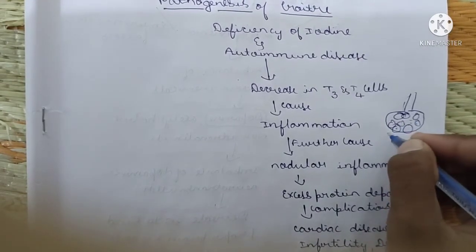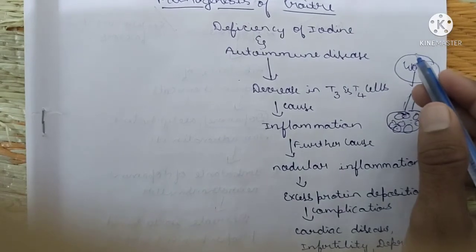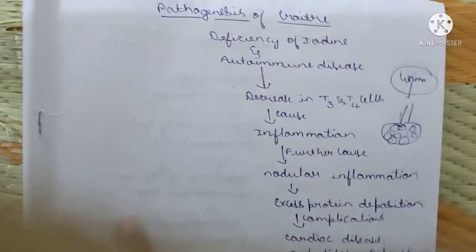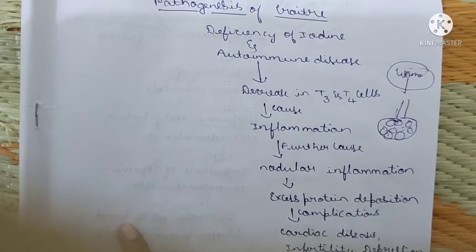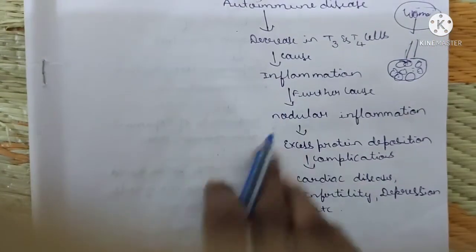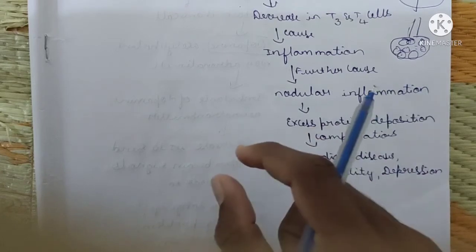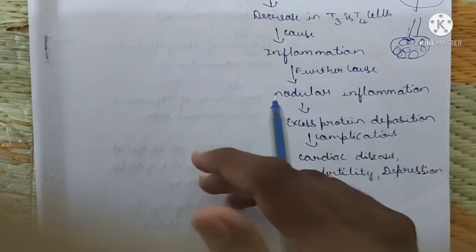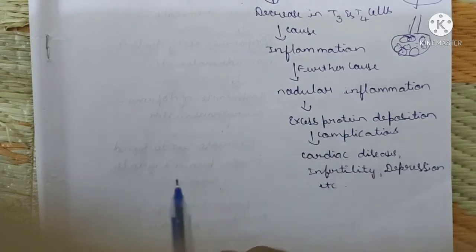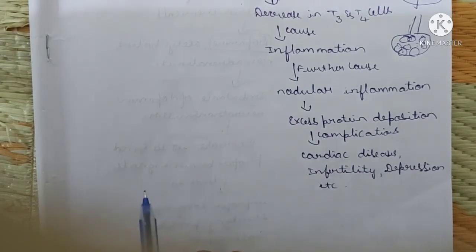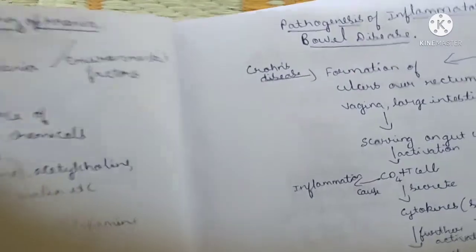The inflammation, if untreated, turns into nodular inflammation — nodule-like structures. This is mainly observed in women. Due to the decrease in thyroid hormones, the nodular inflammation leads to excess protein deposition by anti-inflammatory agents attacking those cells, which complicates into cardiac disease, infertility, depression, and anxiety.